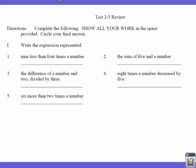The first one says '9 less than 4 times a number.' Anytime you see '9 less than,' that means I'm going to subtract 9 from something. What am I subtracting 9 from? 4 times a number, which we write as 4x. So that one is 4x minus 9. '9 less than' means subtract 9 from 4 times a number.